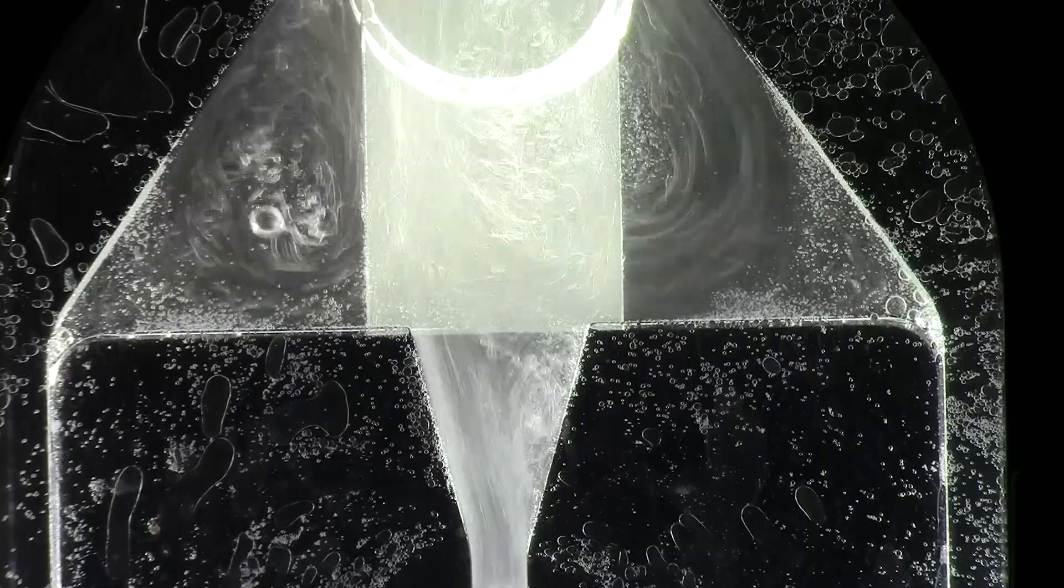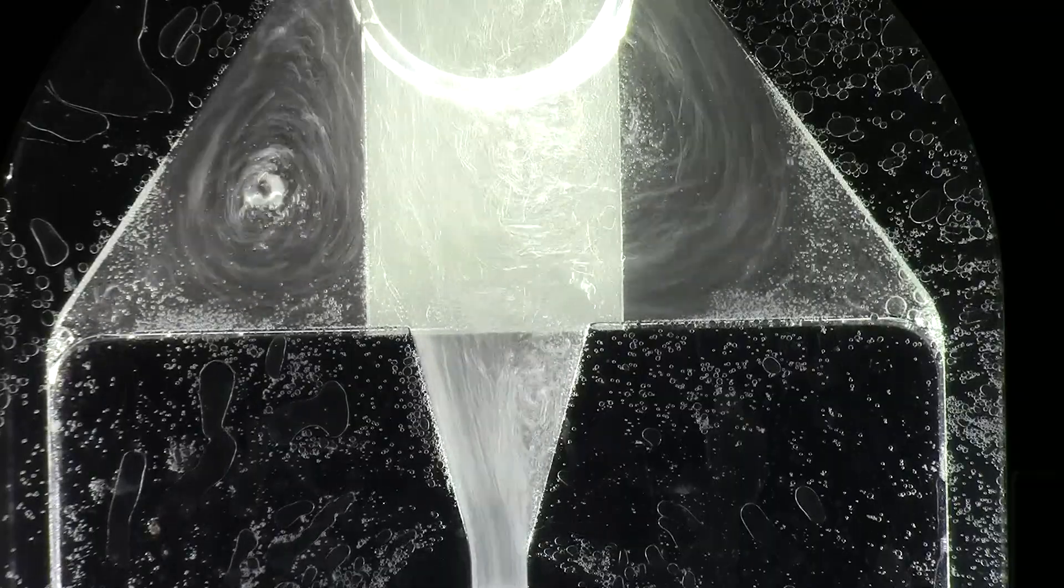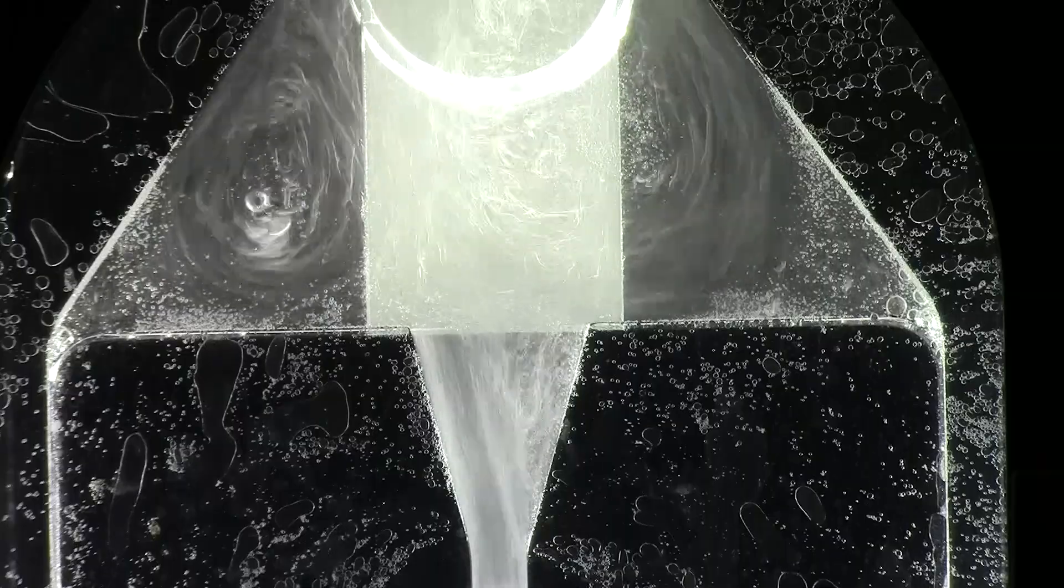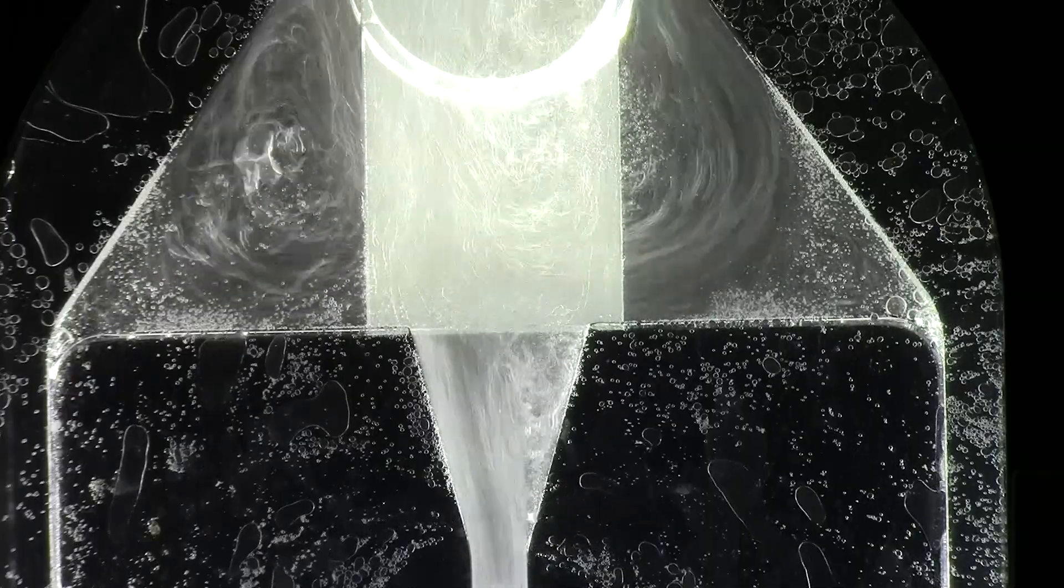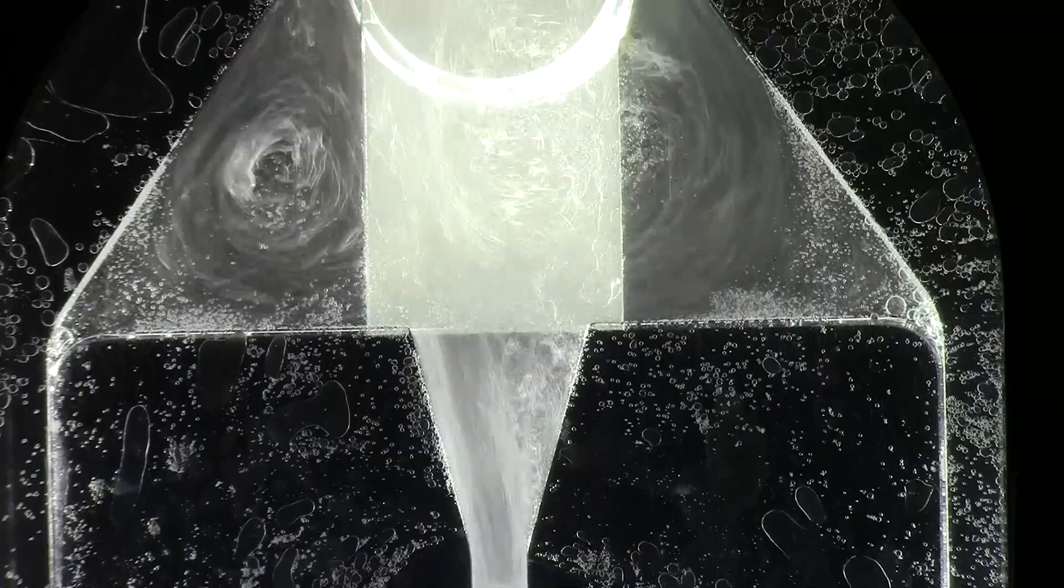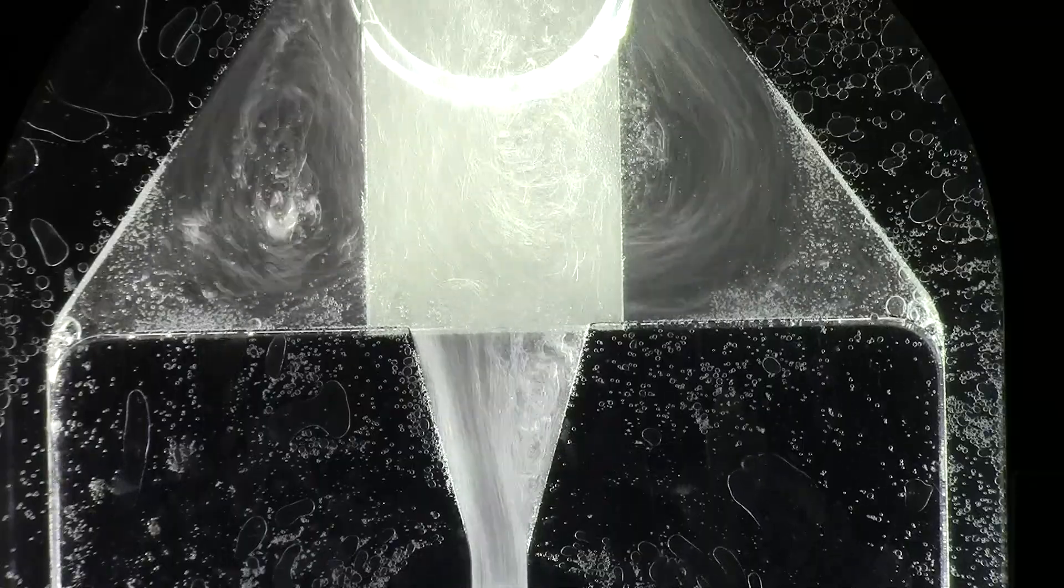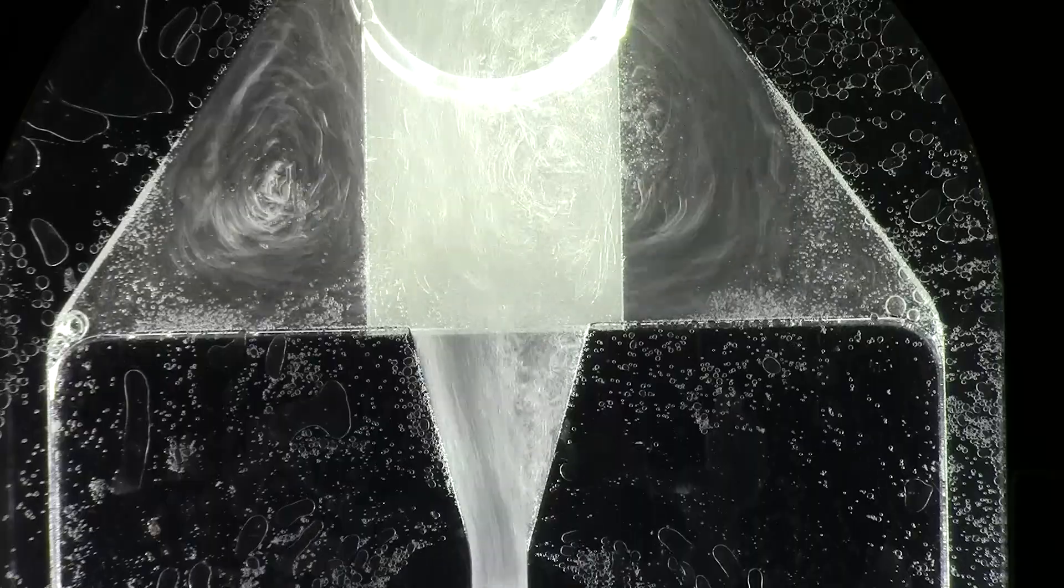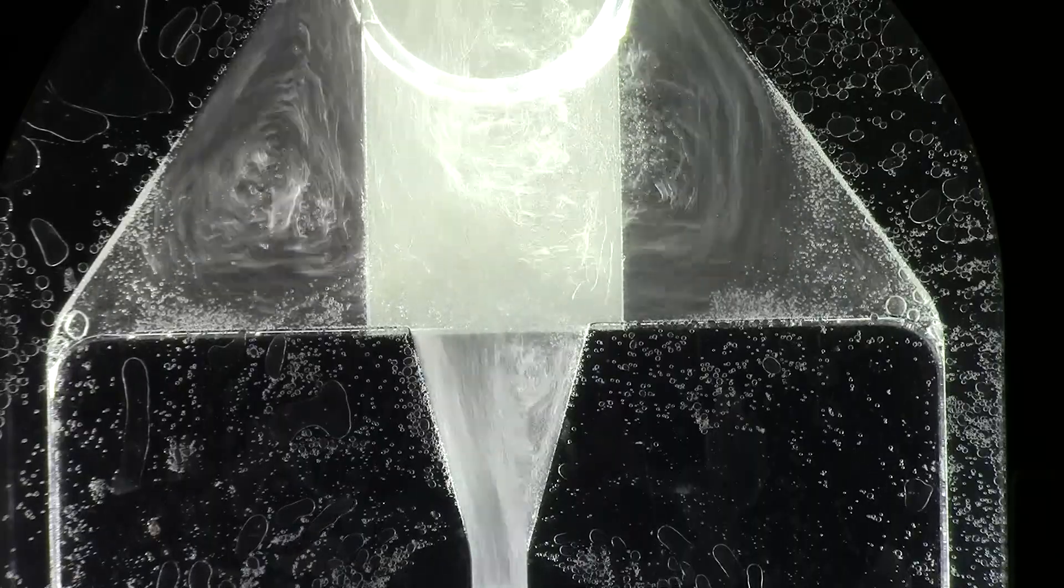Which wall detaches first is completely random and it depends on the small turbulences in the inlet velocity and also on the small differences in the geometry of the walls, because remember the walls are not completely symmetrical.